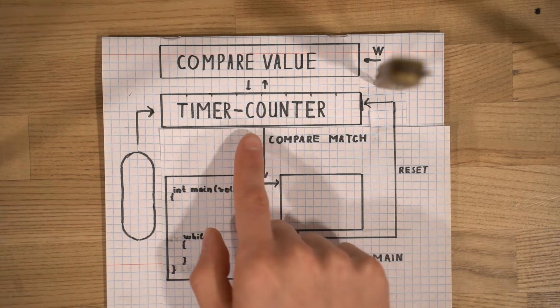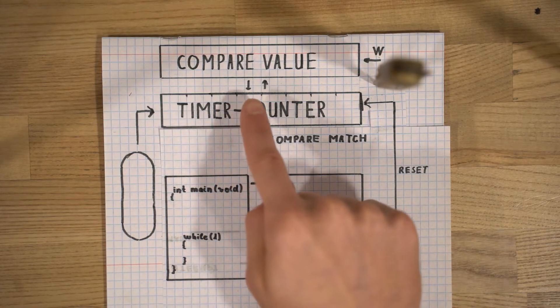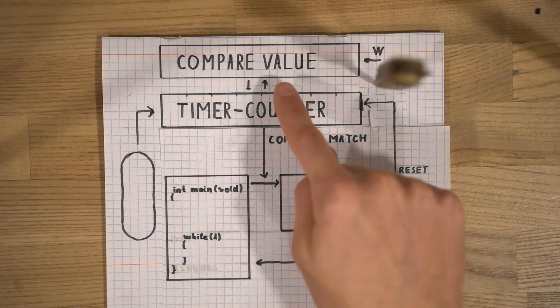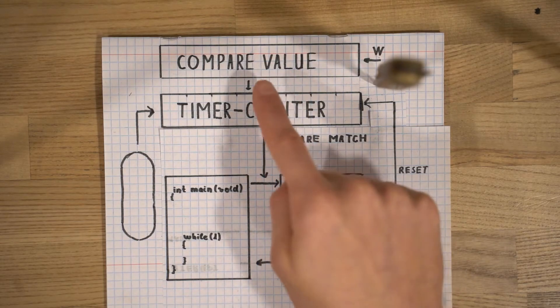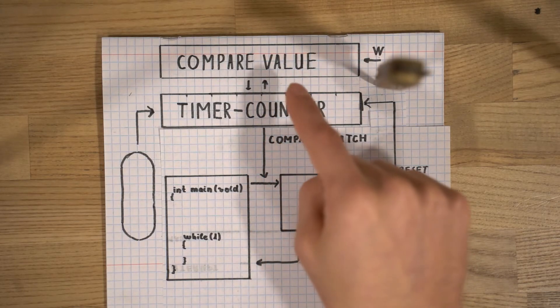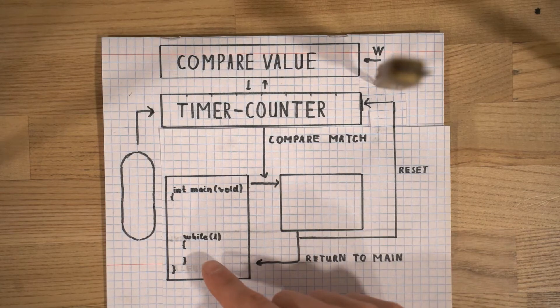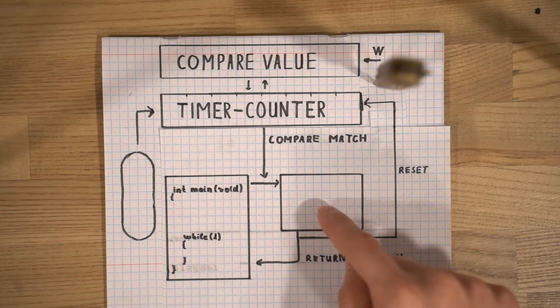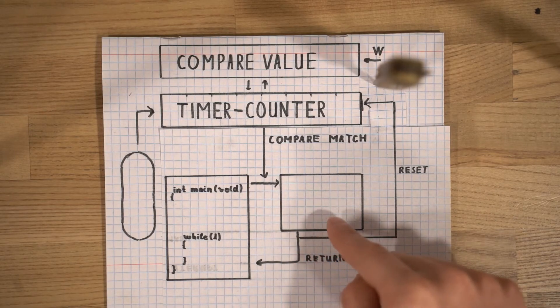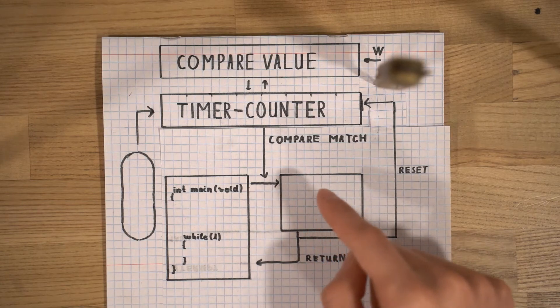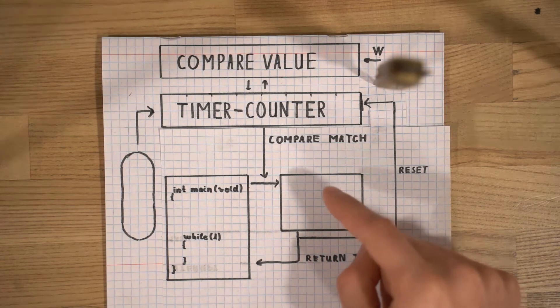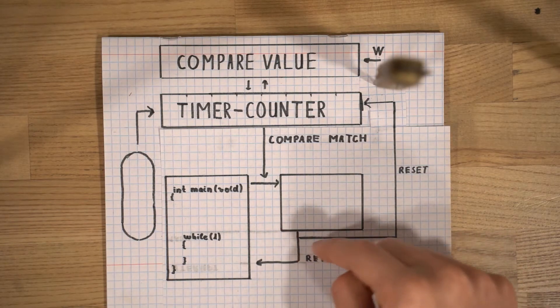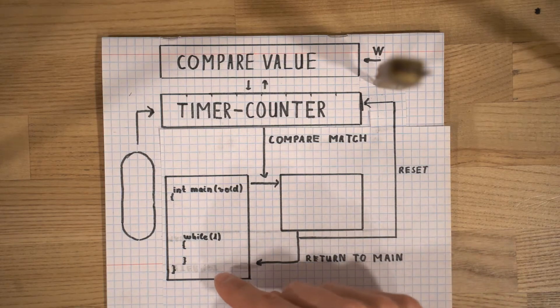So, here we go. We have our main function here and it does the job. Meanwhile, the timer counter is incrementing itself and it has a compare value register. And once these two values in the timer counter and that compare value register are the same, the interrupt event happens and our main function is getting paused and the whole process jumps to the event handler which can be configured by us. We can write commands there. So the interrupt happens, the interrupt handler is called, the counter is being reset and once the function is complete, we return to our main routine.